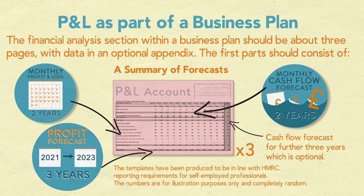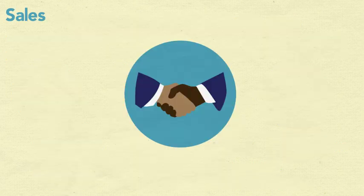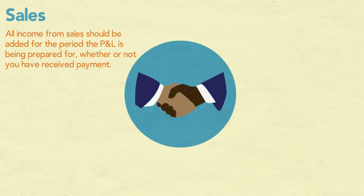The templates have been produced to be in line with HMRC reporting requirements for self-employed professionals. The numbers are for illustration purposes only and completely random. All income from sales should be added for the period the P&L is being prepared for, whether or not you have received payment.